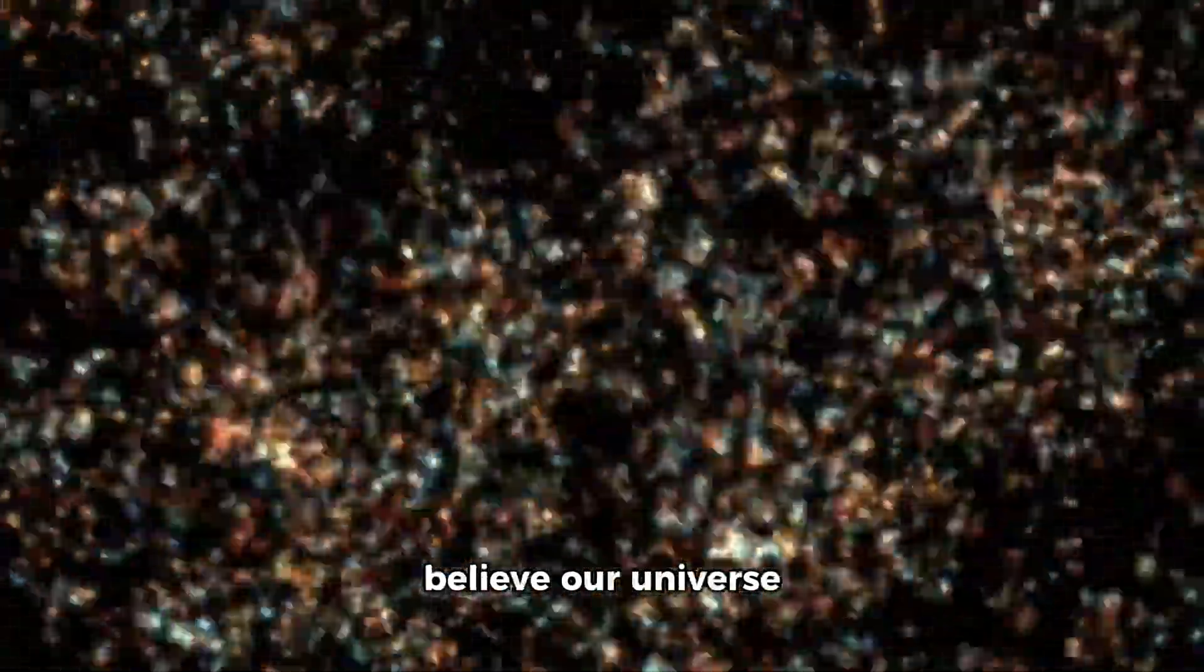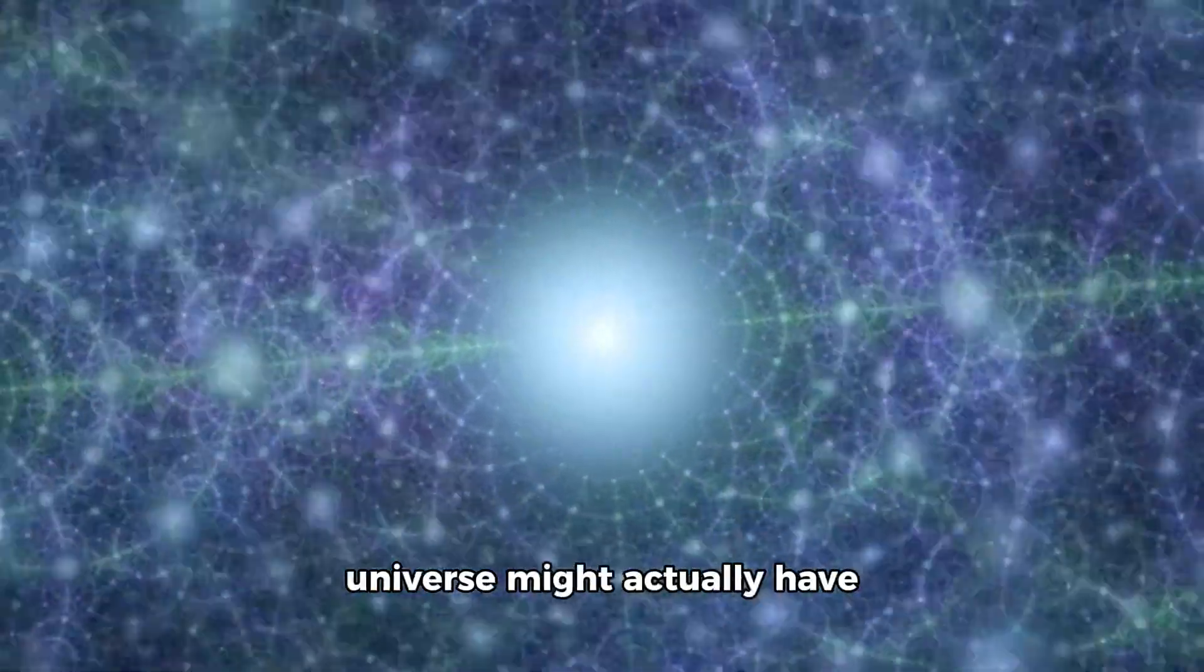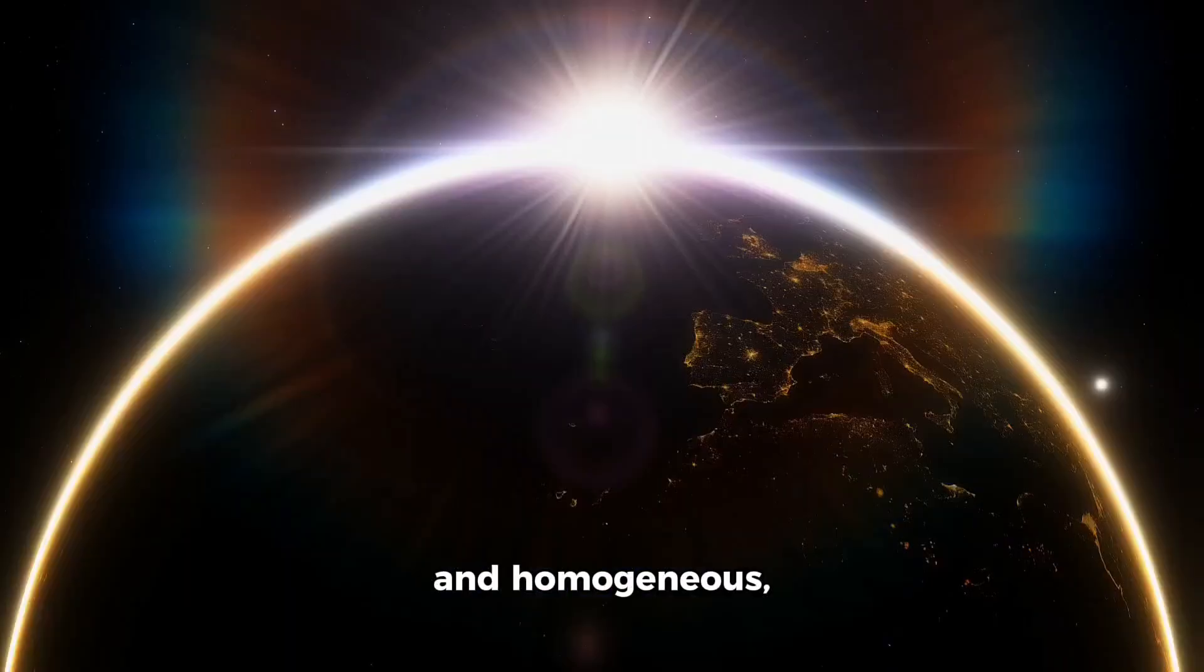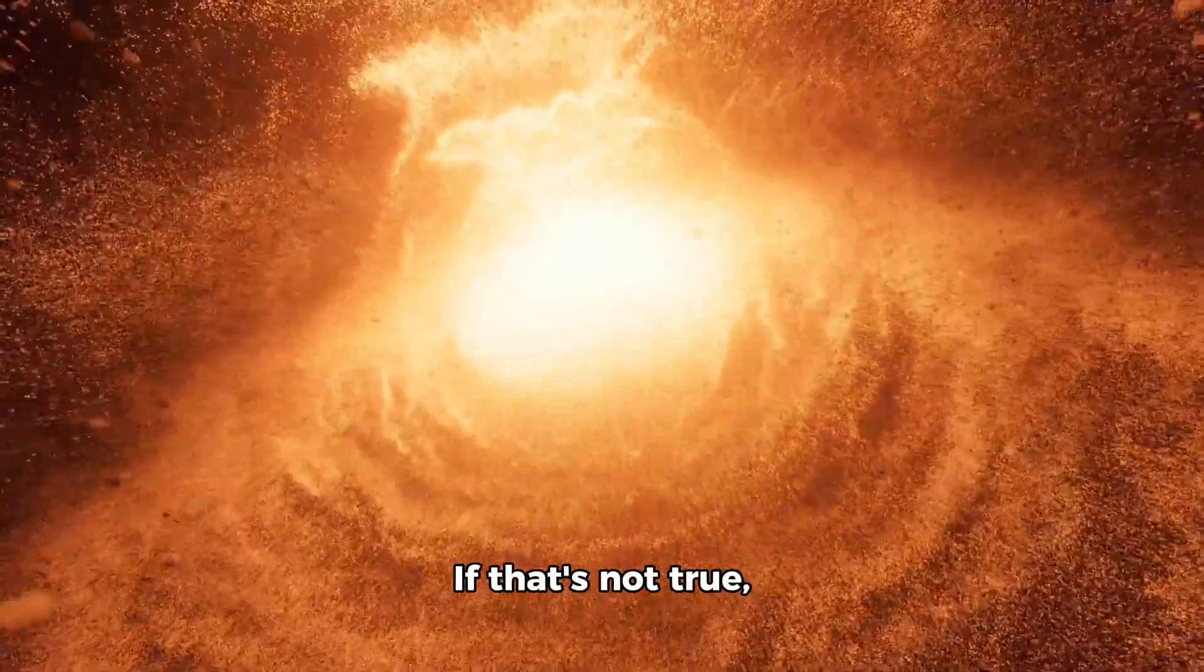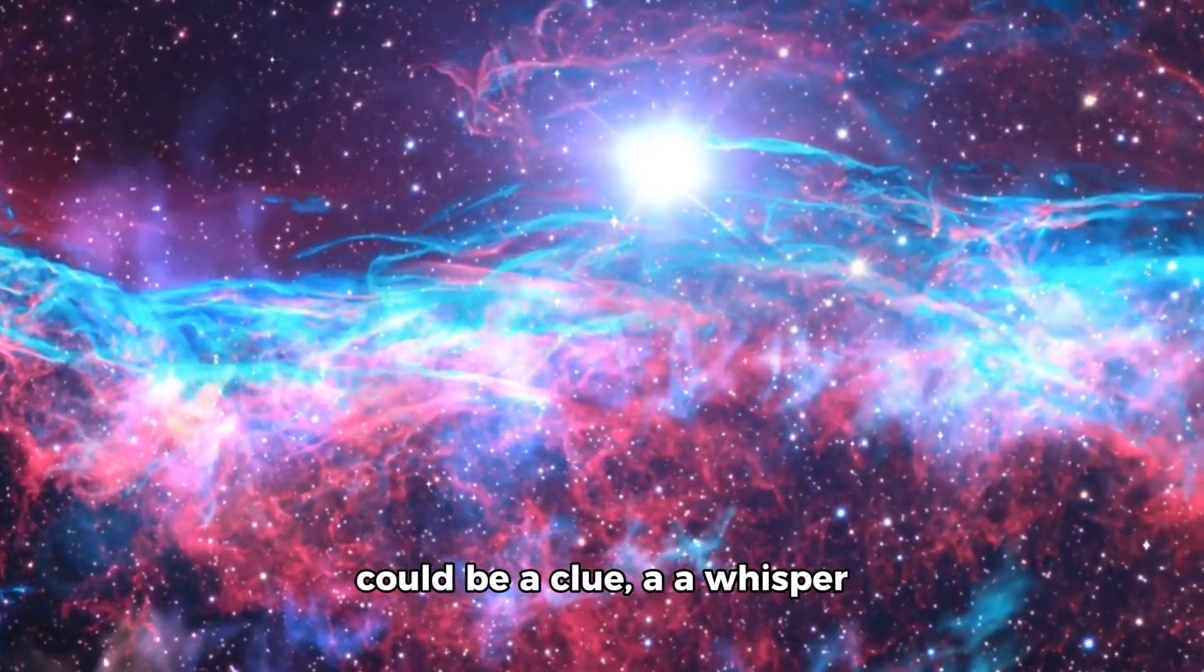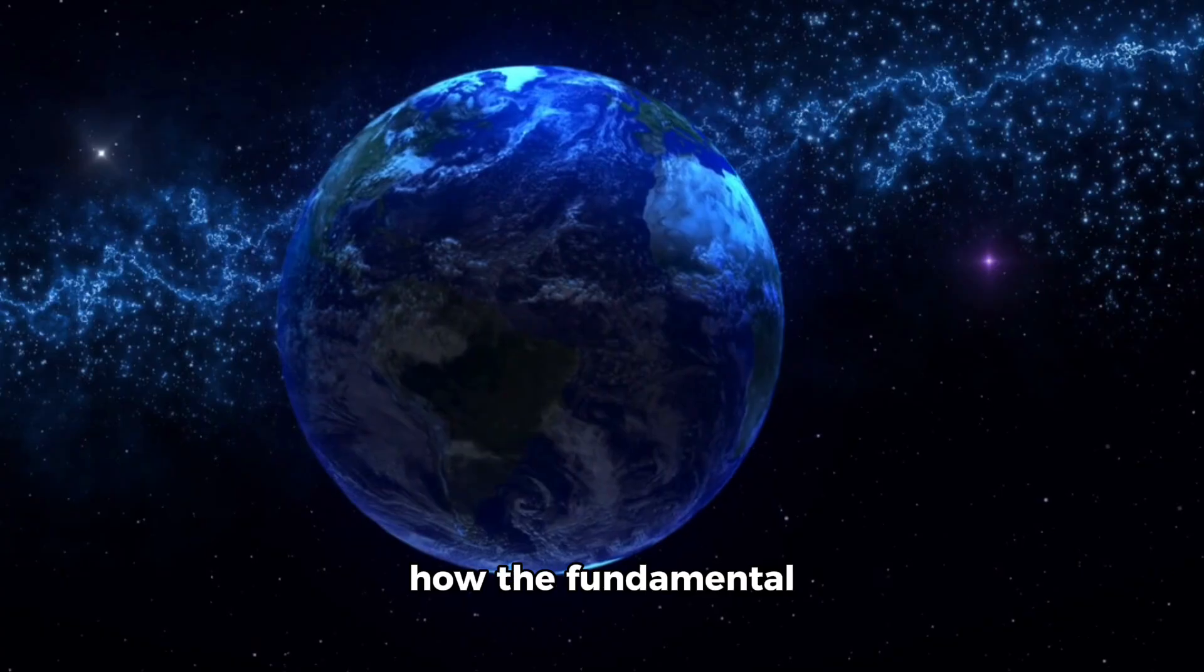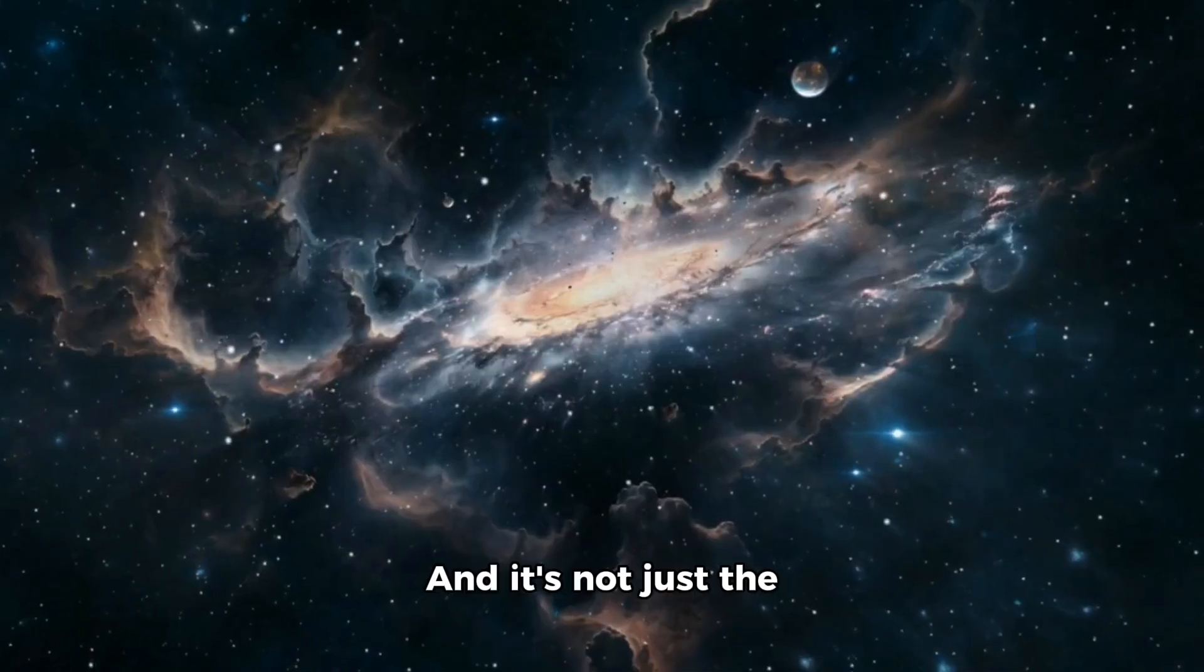Some scientists believe our universe may not be as uniform as we once thought. Something called cosmic anisotropy, meaning that the universe might actually have a preferred direction. That throws a wrench into one of the bedrock assumptions of modern cosmology, the idea that the universe is isotropic and homogeneous, basically the same everywhere in all directions on a large scale. If that's not true, well, then something big might be going on behind the scenes. This preferred direction could be a clue, a whisper of unknown physics at play. Maybe it has something to do with the way our universe came into being, perhaps even inside a black hole. Or maybe it ties into how the fundamental forces of nature behave when stretched across the vastness of space and time. And it's not just the directionality.